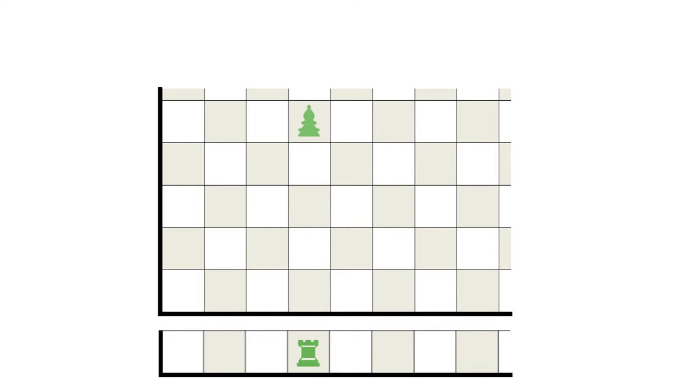If blue moves first from this starting position, his only winning move is to bring the rook onto the same column as the bishop. If red then moves the bishop, blue responds by moving the baby rook to restore the alignment. Or, if red moves the rook, then blue restores the alignment by moving the bishop onto the same column.